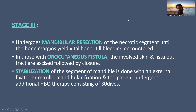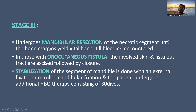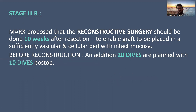Stage three involves resection of the mandible — you remove the entire necrotic segment until the bone margin is bleeding. If there is any orocutaneous fistula present, you remove the fistula tract and involved skin, then close the wound. Stabilization of the segment can be achieved by external pins or maxillomandibular fixation. An additional HBO therapy is given, and the reconstruction stage is done after 10 weeks. Before reconstruction, an additional 20 dives of HBO therapy are given, and 10 dives post-op are also given.